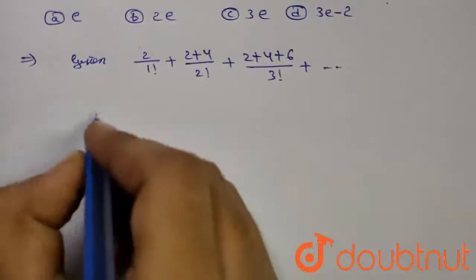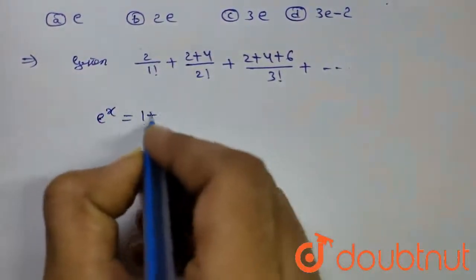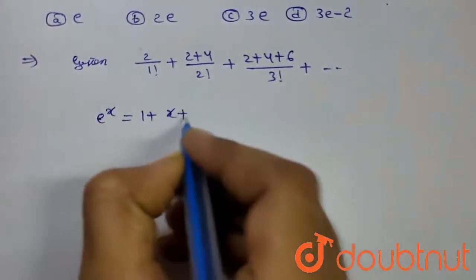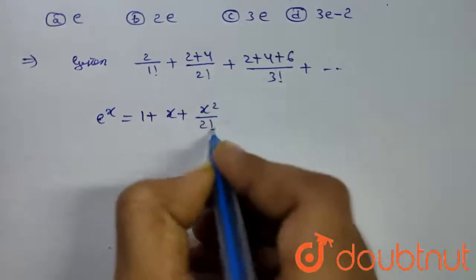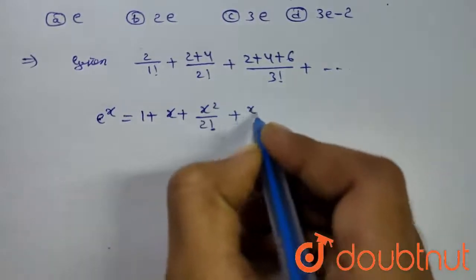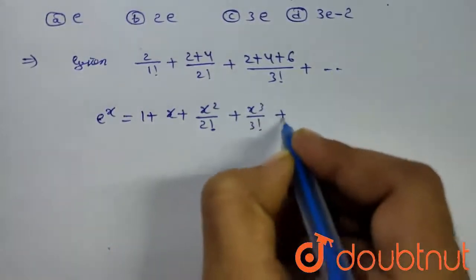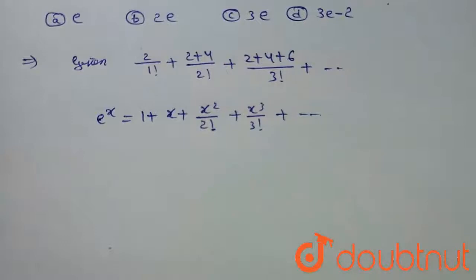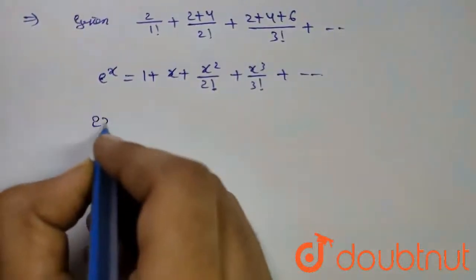we need to consider e^x, which is equal to 1 plus x plus x squared divided by 2 factorial plus x cubed divided by 3 factorial, and so on.